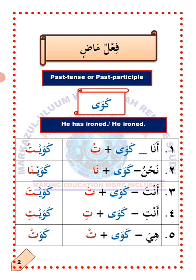Thalatha, number three — Anta, you. This term is only applicable to a male person in Arabic. So how do we change the verb kawa to suit Anta? All you need to do is to attach tah carrying fataha to the last letter, then give sukun to the letter before it. The verb kawa will now become kawaita, which means 'you have ironed.'